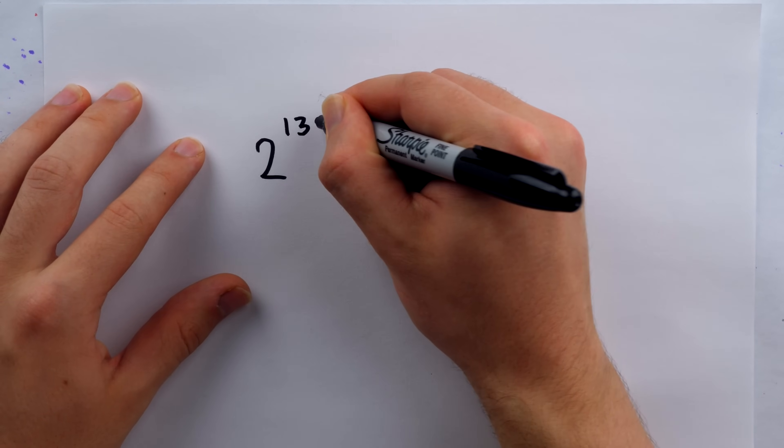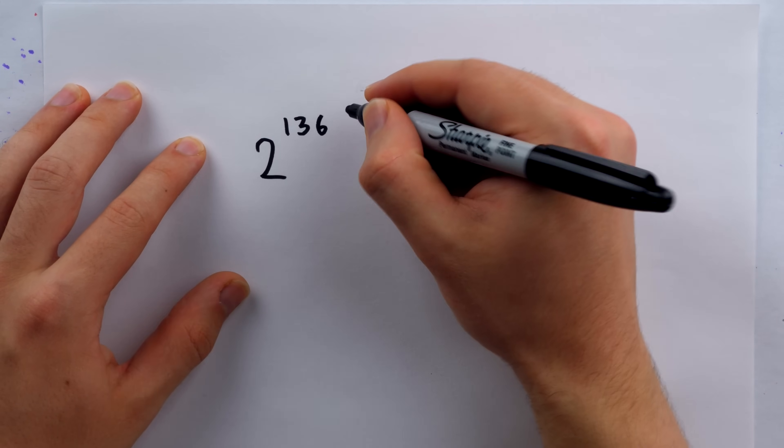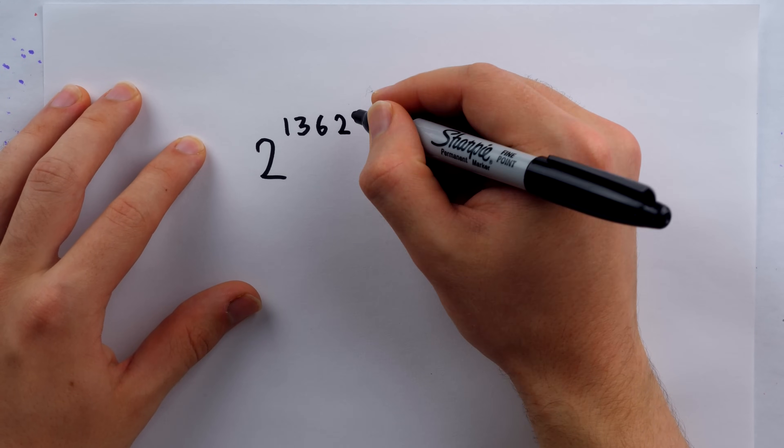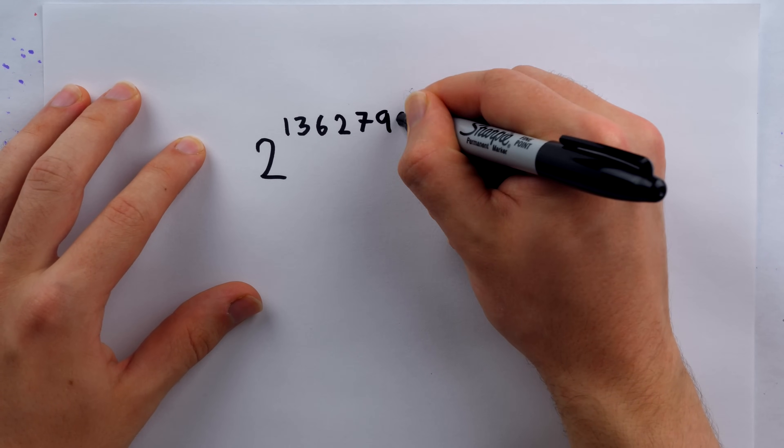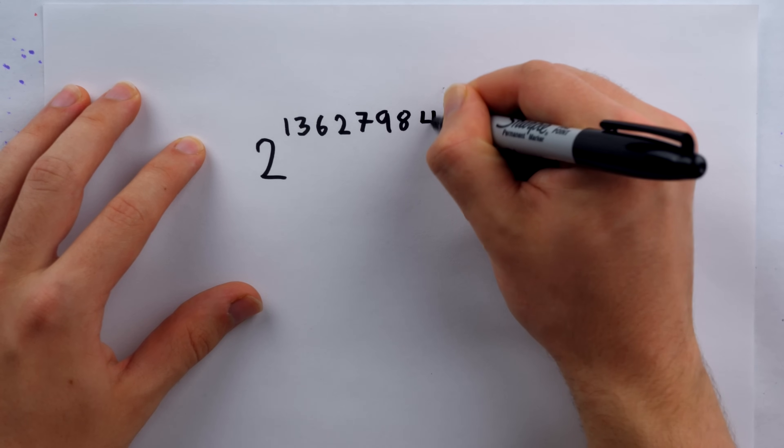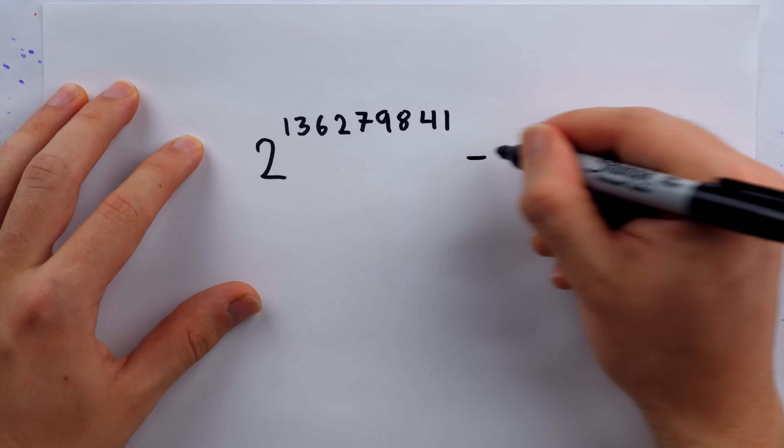they've just found a new largest prime number known to mankind. And this prime number is around 17 million digits longer than the previous largest known prime number.